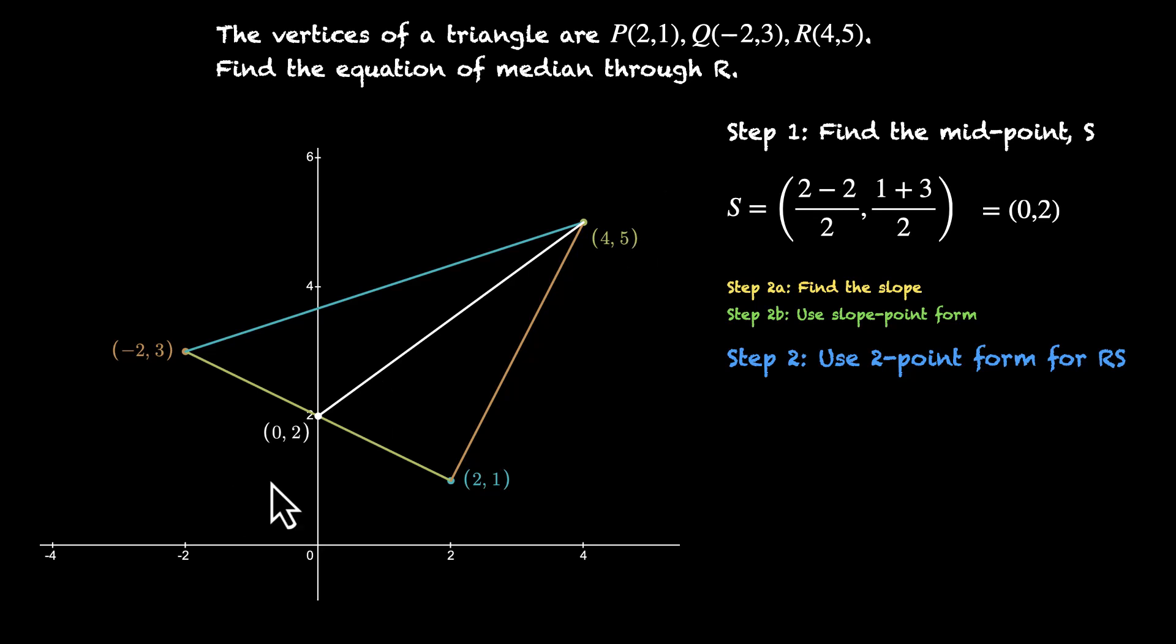So the equation of this line using two point form, that's going to be this. Plugging the values of x1, y1 and x2, y2, this is what we get: (y-2) by (x-0) equals to (5-2) by (4-0). Now we can simplify. (y-2) by x equals to 5 minus 2 is 3, 3 by 4. Cross multiplying: 4y minus 8 equals to 3x. This gives us 4y equals to 3x plus 8. So the equation of the median is 4y equals to 3x plus 8.